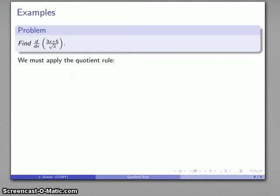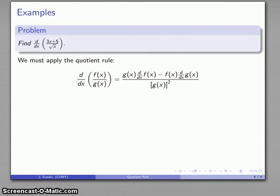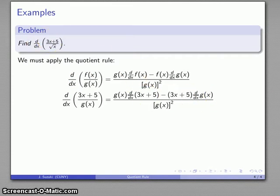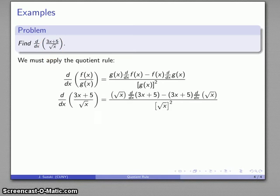I'll write down the quotient rule. Once again, a good way of remembering this rule is to write it down every time you use it. After a while, it becomes memorized. Here I'll use differential notation for variety: bottom derivative top minus top derivative bottom, all over bottom squared. At this point, I just need to fill in the blanks. My numerator function is 3x + 5, my denominator function is √x. I'll fill those in where they belong.